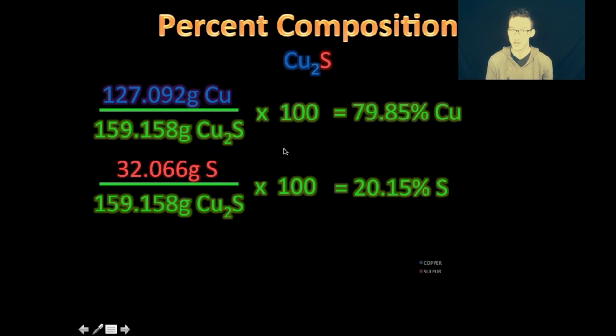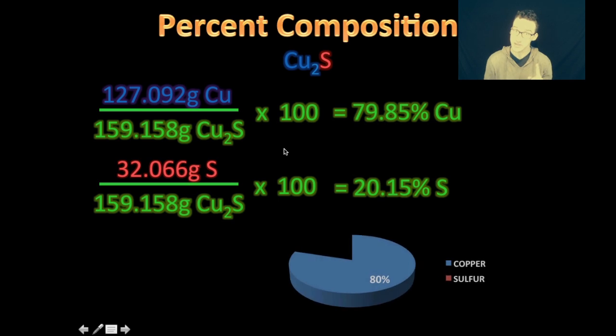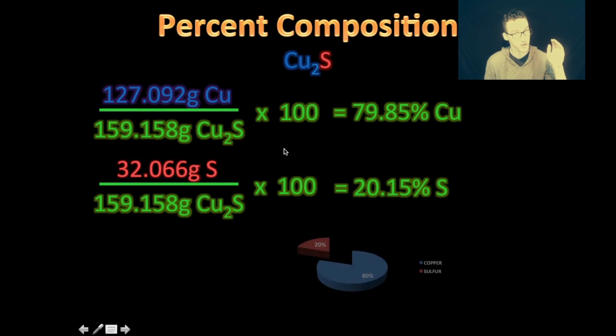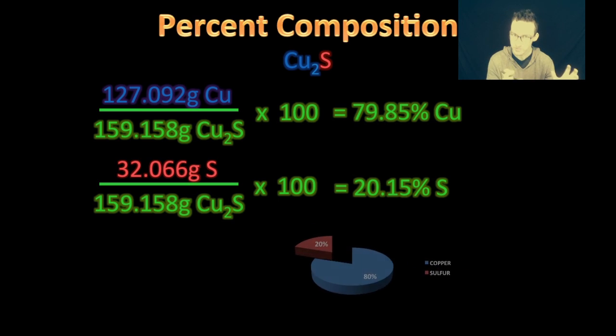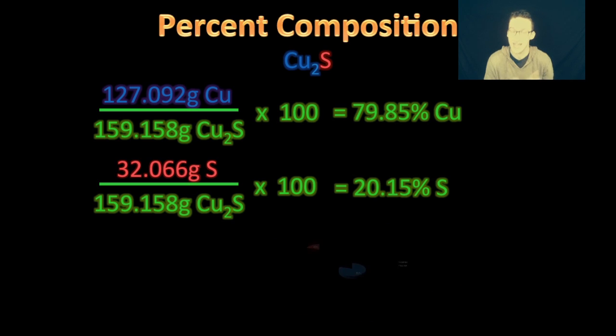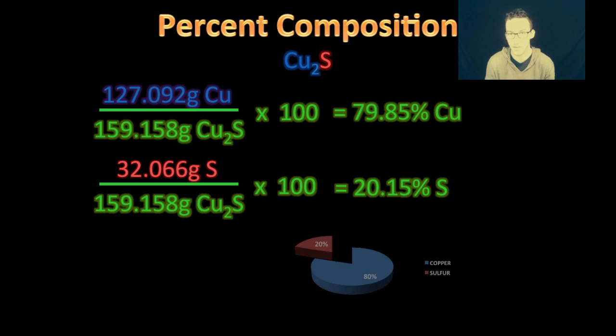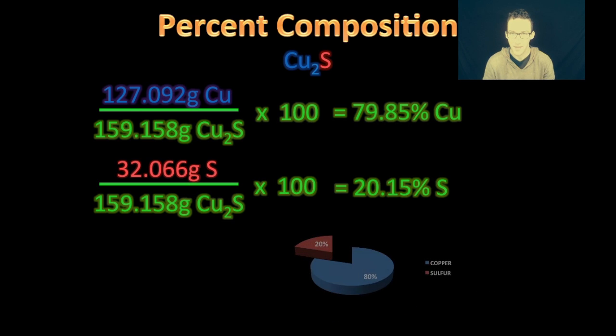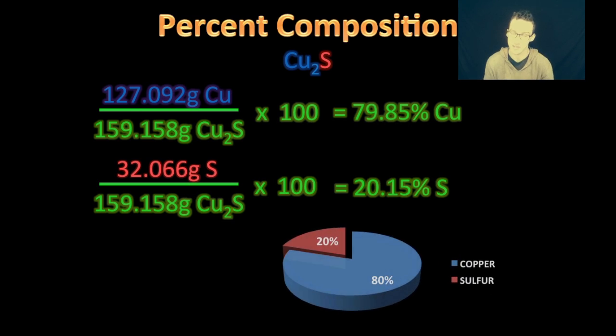Likewise, you complete a similar calculation for the sulfur content. Although this time, notice we're using the part sulfur over the same whole mass of the compound. As you take a look at the math on your screen, the majority of this compound by mass is copper. About 80% is copper, whereas only 20% of this compound by mass is sulfur.